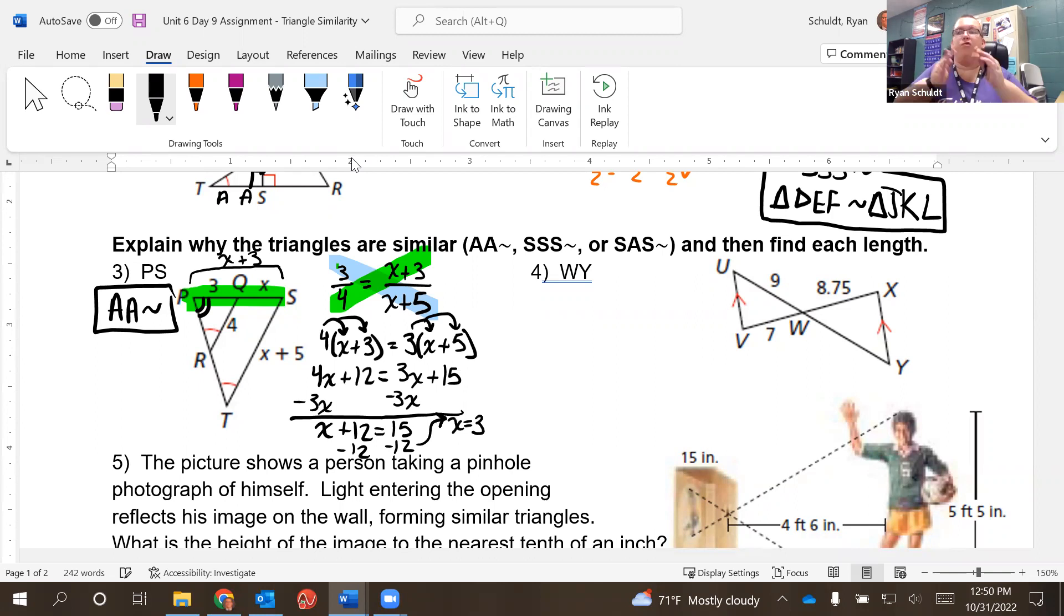Subtract the three X over. X plus 12 equals 15. Subtract 12, and we're going to end up with X equals three. Do they ask us just for X? No. They ask us for PS, which is three plus X. X is three. Three plus three gives us six. So PS is equal to six.